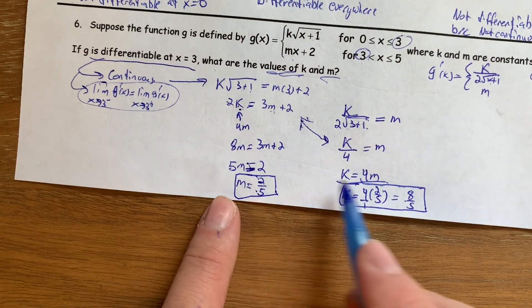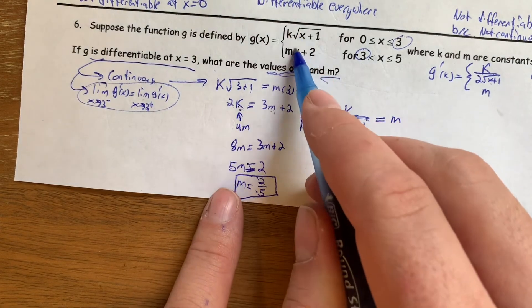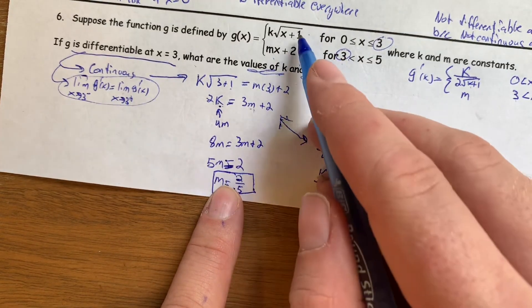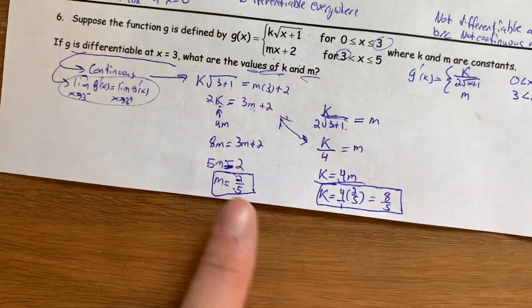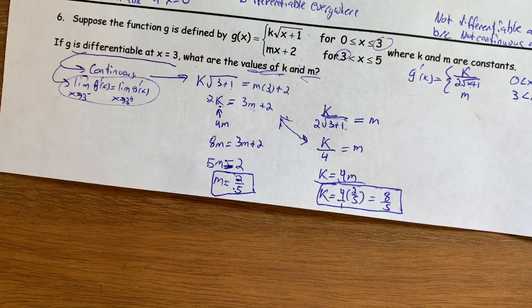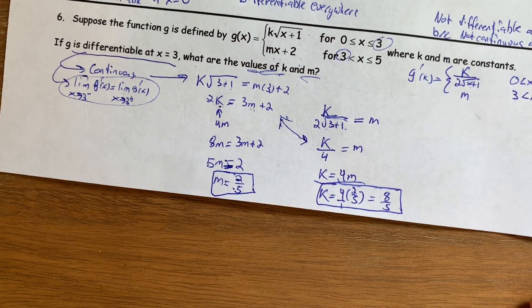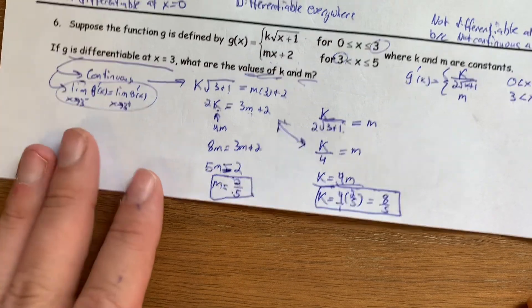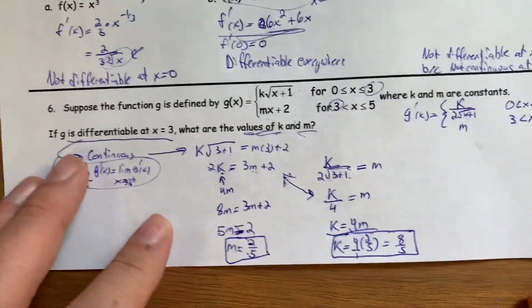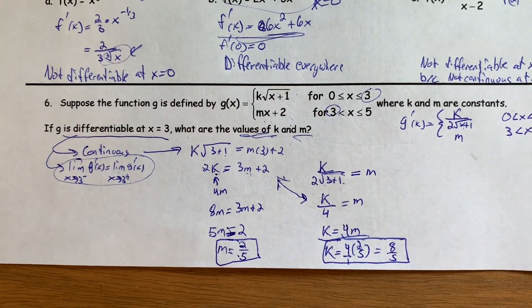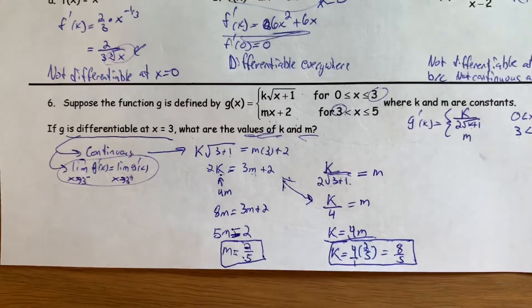If m is 2 fifths and k is 8 fifths, then these functions will both equal each other when x equals 3, and the derivative of these functions will be equal to each other. So the limit of the function from the left and the right is the same, and the limit of the derivative from the left and the right are the same. So why don't you guys try one of these on your own and see how you do, and then you'll get a chance to practice on your homework tonight. Good luck with that!